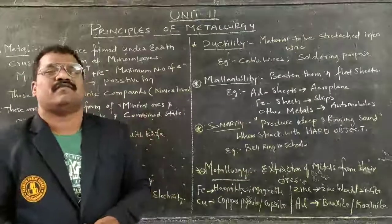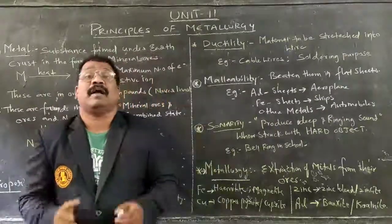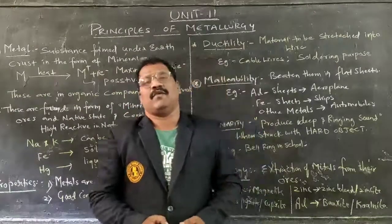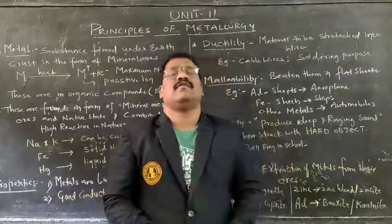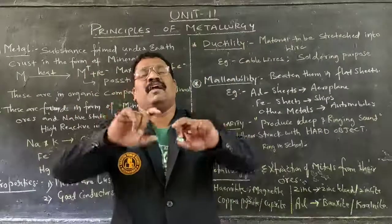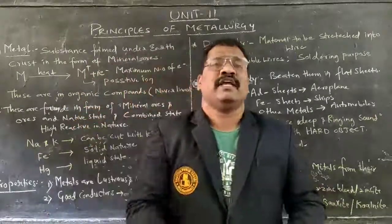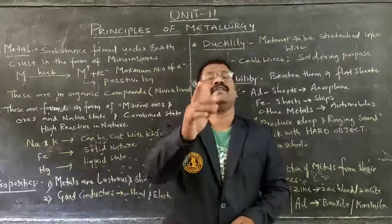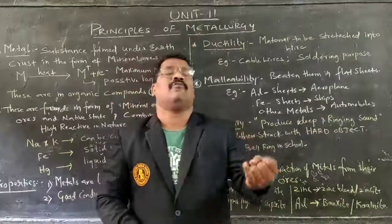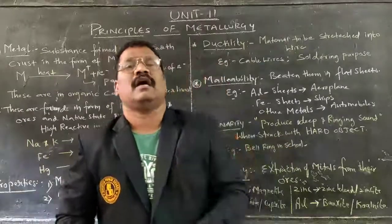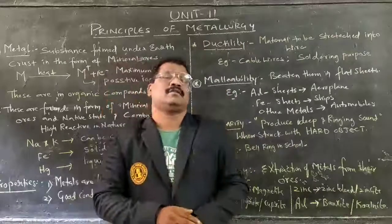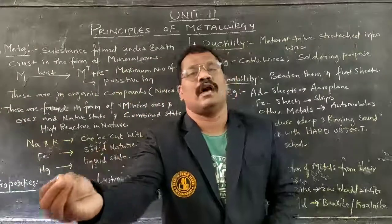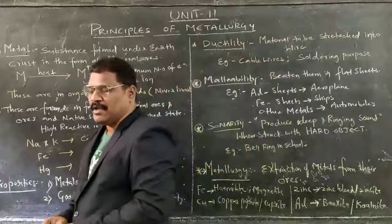Before going to the definition of metal, metals play an important role in our daily life. For example, gold and silver can be used in the form of jewelry or ornamental purposes. Gold is very costly. Aluminium, copper, iron, and brass — using all these metals we can prepare different types of utensils which can be used for household appliances.